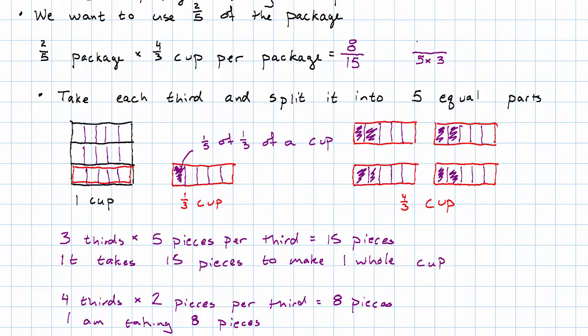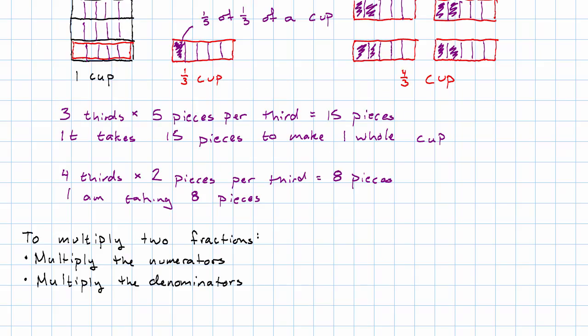Again, notice what we've done. We've multiplied the numerators. To multiply two fractions then, we simply multiply the numerators and then multiply the denominators.